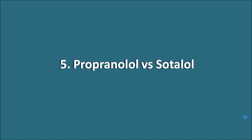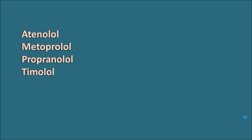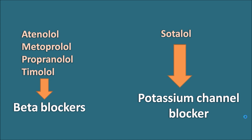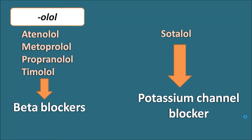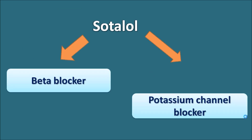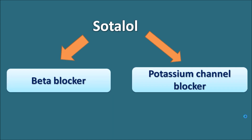The fifth pair is propranolol versus sotalol. Drugs like atenolol, metoprolol, propranolol, and timolol are beta blockers, while sotalol is a potassium channel blocker. All share the '-lol' suffix, but beta blockers specifically end in '-olol', whereas sotalol ends in just '-lol'. Notably, sotalol has both beta blocker and potassium channel blocker activity — because it retains some beta blocker action, the '-lol' suffix is kept, but it is not a pure beta blocker, so it lacks the full '-olol' ending.